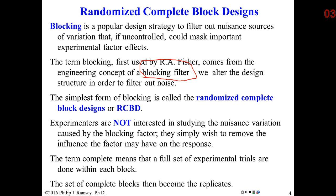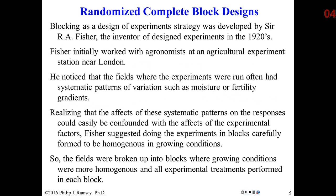Another key point — and this is a big one — the nuisance variation is really not of interest. It truly is a nuisance to your experiment, and you just want a way to remove its effect so you can see if the factors you're really interested in are having an effect. This goes back to R.A. Fisher in the 1920s, and what he discovered is basically true: when you do field trials in agriculture, the fields are in no way uniform. There are typically very big differences between sections of the field, and those differences are typically known to the scientist.